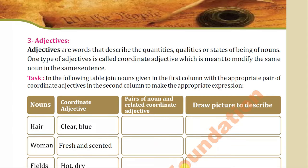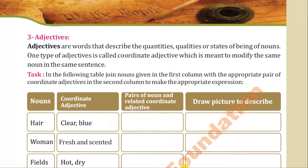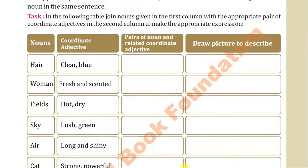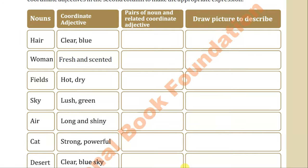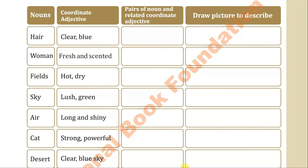Now come to the exercise. In the following table, join the nouns given in the first column with the appropriate pair of coordinate adjectives in the second column to make the appropriate expression. The first expression may be 'clear blue sky.' Next is 'fresh and scented air.'